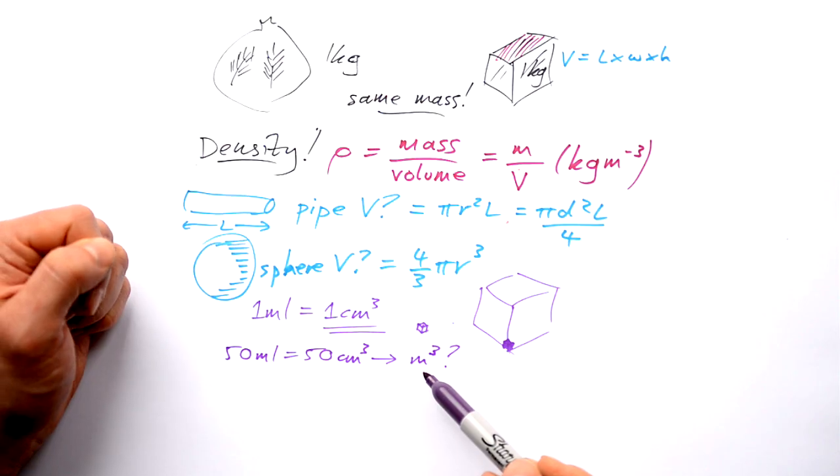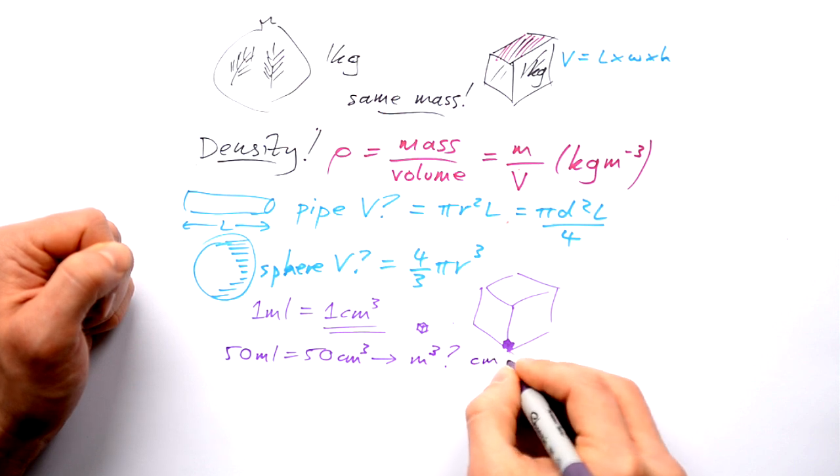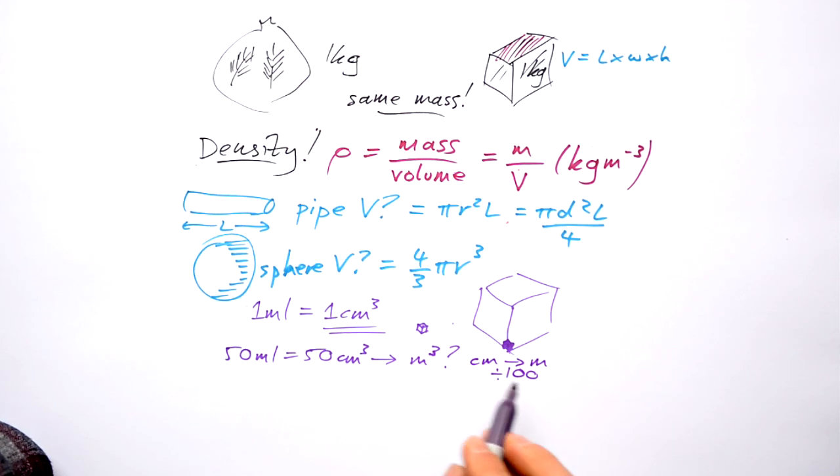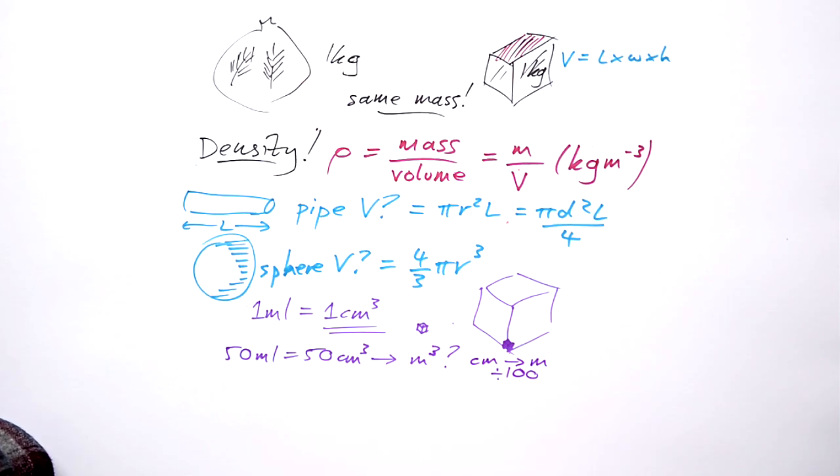But let's have a think. Am I timesing or dividing by 100? Going from centimeters to meters I should have a smaller number. So I need to divide by 100. Once you've figured out that all you have to do is do that three times.